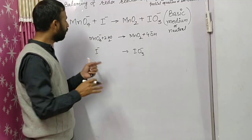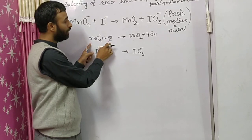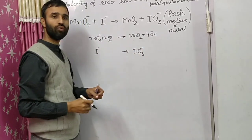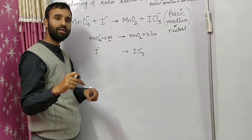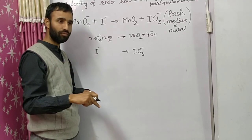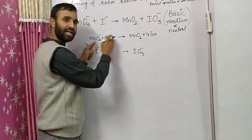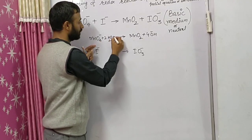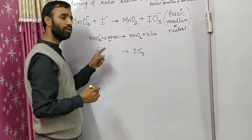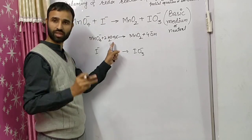Now we balance the charge. On the left side there is one negative charge total, and on the right side there are four negative charges. This side is deficient by three negative charges, so we add three electrons to the side deficient in negative charge.